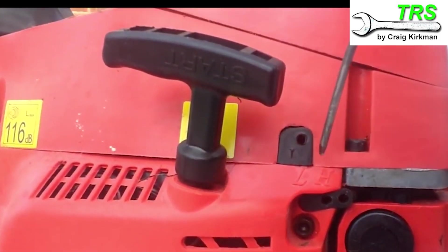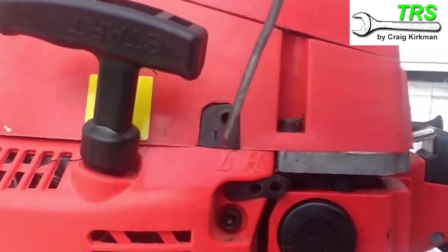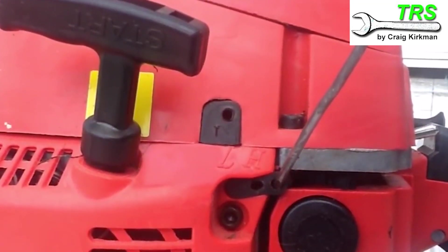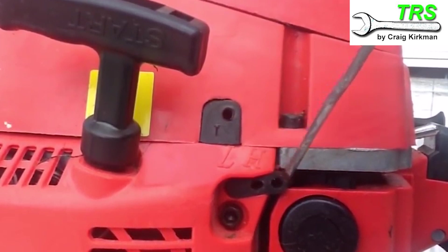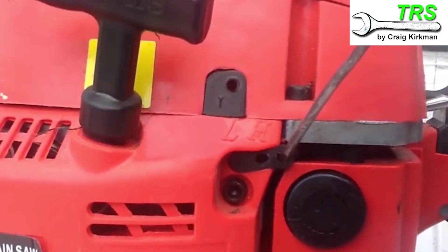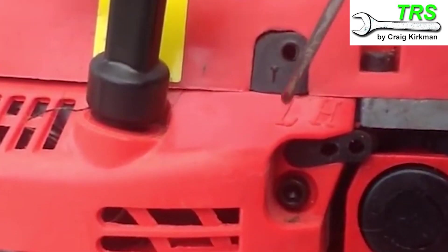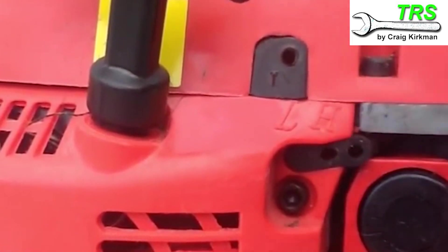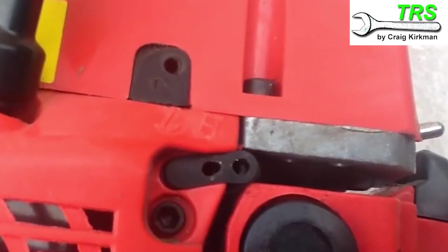Looking at the side of this chainsaw, we've got the H there and the L there. This little adjustment hole here is for the H, meaning the high, and it goes all the way through to the carburetor. It's the same for the L, meaning low screw, and there's a hole underneath there for that.